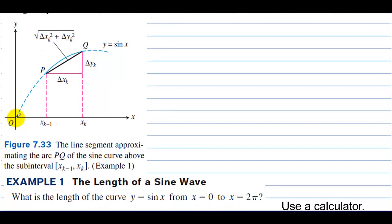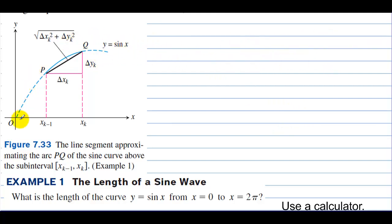In other words, if you started here and walked along the sine wave — the wavelength is from crest to crest, but that's just a linear distance. We're asked how far would you walk if you walked one complete wave, or even just this one little section?